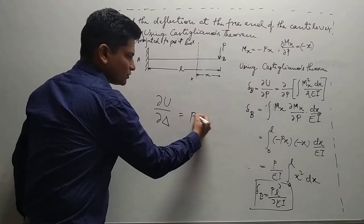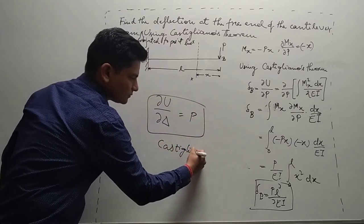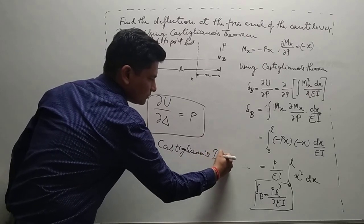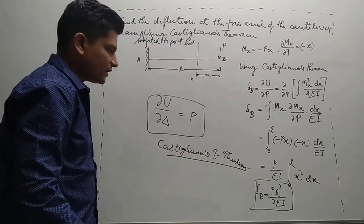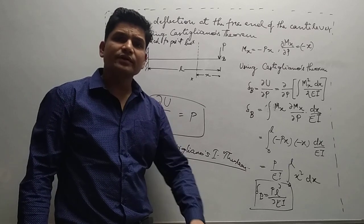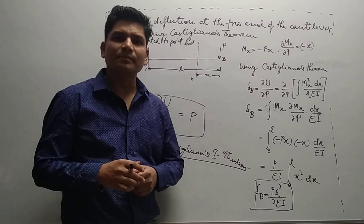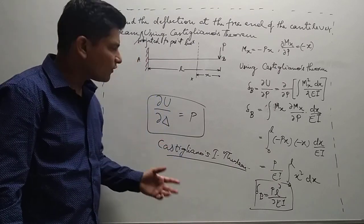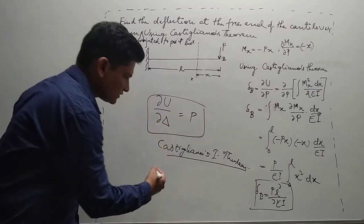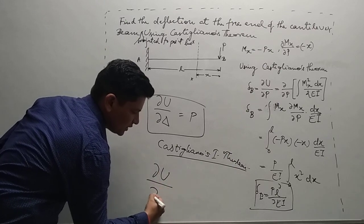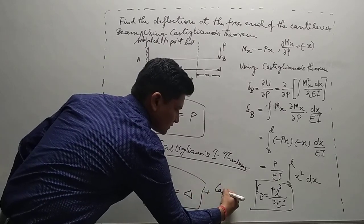So this force is represented as P. That is our Castigliano's first theorem. Now for Castigliano's second theorem, it states that if any structure, the material of which is linearly elastic, supports are unyielding and the temperature is constant, then the first partial derivative of total strain energy with respect to the force gives the deflection at that point. Mathematically it is represented as δU/δP = δ (delta).